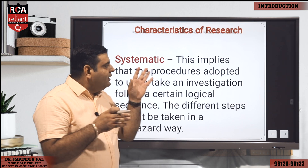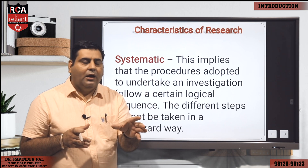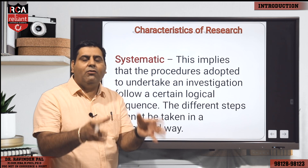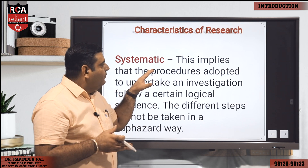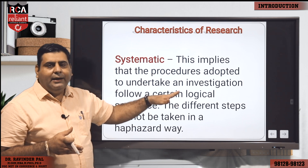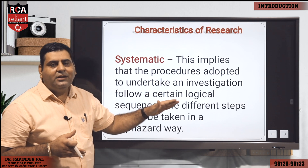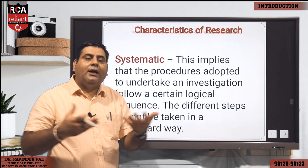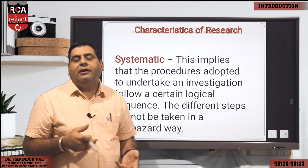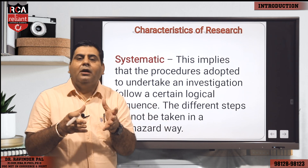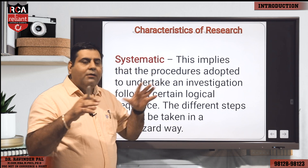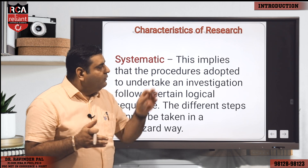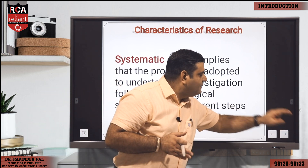After studying the meaning of research, we must know about its features. The very first feature is that research should be conducted in a systematic way. The system says we should follow all steps of research in a predefined sequence — no shuffling is allowed. Systematic means the procedures adopted to undertake an investigation follow a certain logical sequence: first, understanding the problem; second, developing a hypothesis; third, data collection; fourth, analyzing data; fifth, interpretation of data; and finally, communication of findings.